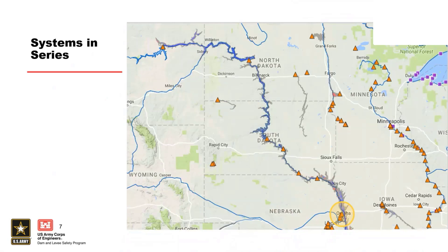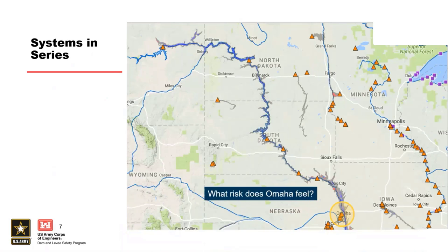Here's an example of some dams in series. This is Omaha, Nebraska, right down here, along the Missouri River. Along this system, we have many different dams. But down in Omaha, you have to ask yourself: what risk does the population in Omaha feel? Does it feel the risk from just one structure immediately upstream? Does it feel the risk from this whole series of structures? It feels the risk from a whole series of structures.